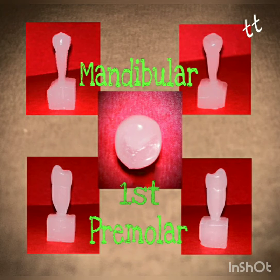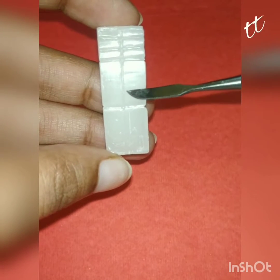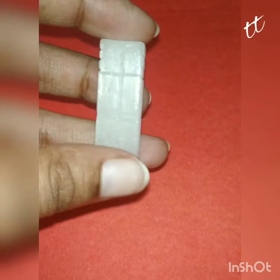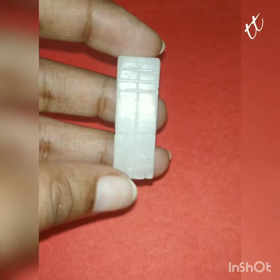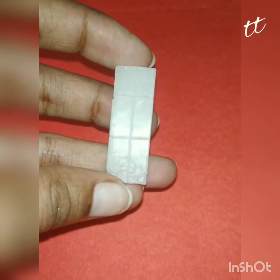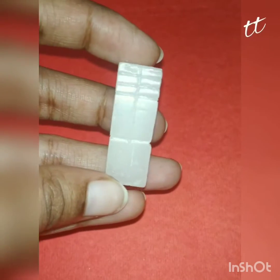Hello everyone, this video is for the carving of the mandibular first premolar. As you can see, I have a wax block and I have marked the midline on each surface, also labeled as labial, lingual, mesial, and distal.